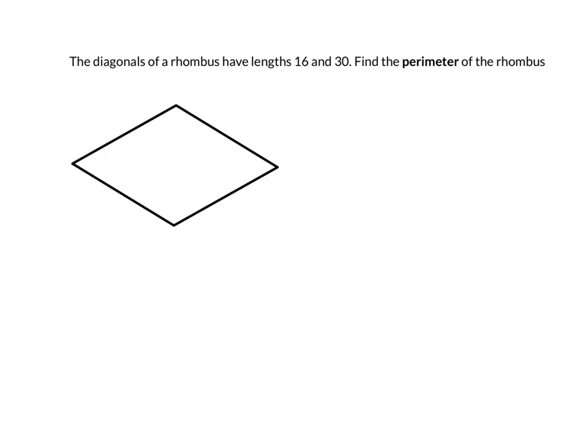So first of all, they're talking about the diagonals of the rhombus. That's referring to the diagonals going from one corner to the other corner, so those are the two diagonals. This diagonal here looks like the longer one, so we'll have that be our 30. If that's 30 and this one is 16...